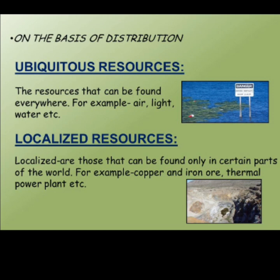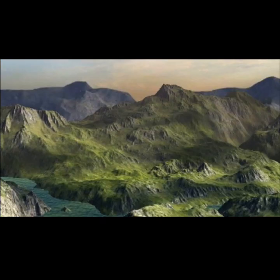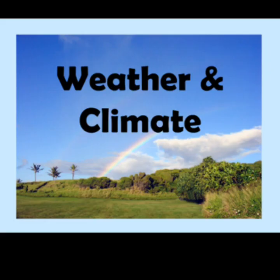On the basis of distribution, natural resources can be divided into two types: ubiquitous and localized. Ubiquitous means resources that can be found everywhere in the world — for example, the air we breathe. Localized resources are found only in certain places — examples are copper and iron. The distribution of resources is not equal; it depends on physical factors like terrain, climate, altitude, etc.